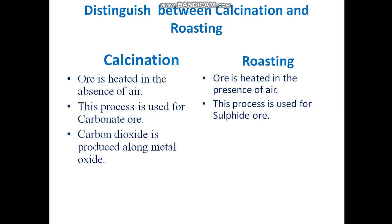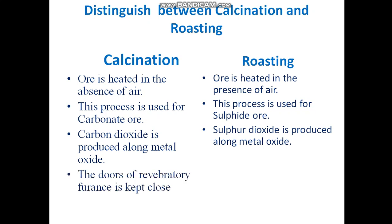In calcination, carbon dioxide is produced along with the metal oxide. In roasting, sulphur dioxide is produced along with the metal oxide. In calcination, the doors of the reverberatory furnace are kept closed, whereas in roasting the doors of the reverberatory furnace are kept open.